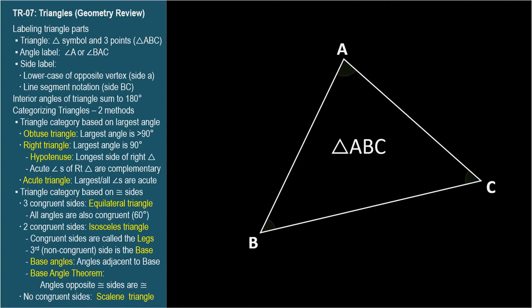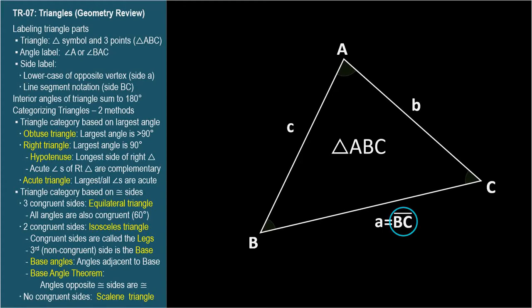The sides of the triangle are labeled with the lowercase letter of the opposite angle, so the side opposite angle A is labeled lowercase a. For this triangle, the other sides would be lowercase b and lowercase c. The sides can also be referenced using line segment notation, where the endpoints of the side are used in the label. Line segment BC connects points B and C, which is the same as side a.